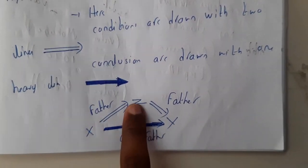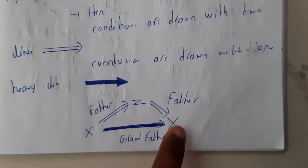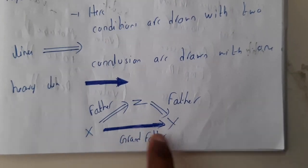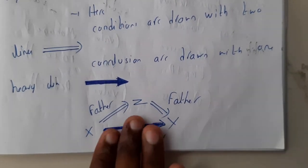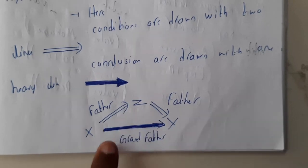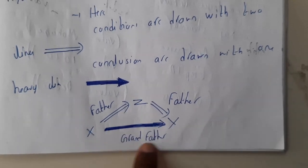X is the father of Z and Z is the father of Y, so indirectly X is the grandpa of Y, right? These statements we did not judge previously. In extended semantics you can judge this also by using shaded arrows.